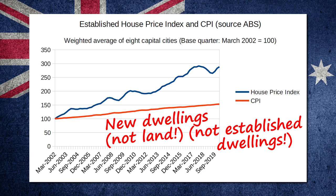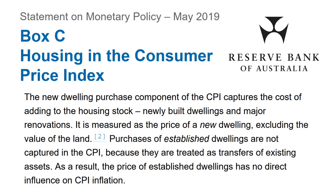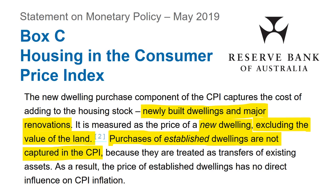So if you buy a second-hand house that has risen in price over the last year by, say, 15%, that massive increase in price is not reflected in the Consumer Price Index. This information — or should I say misinformation — is corroborated by the Reserve Bank of Australia in their Statement on Monetary Policy. They state: 'The new dwelling purchase component of the CPI captures the cost of adding to the housing stock — newly built dwellings and major renovations. It is measured as the price of a new dwelling excluding the value of the land. Purchases of established dwellings are not captured in the CPI because they are treated as transfers of existing assets. As a result, the price of established dwellings has no direct influence on CPI inflation.'